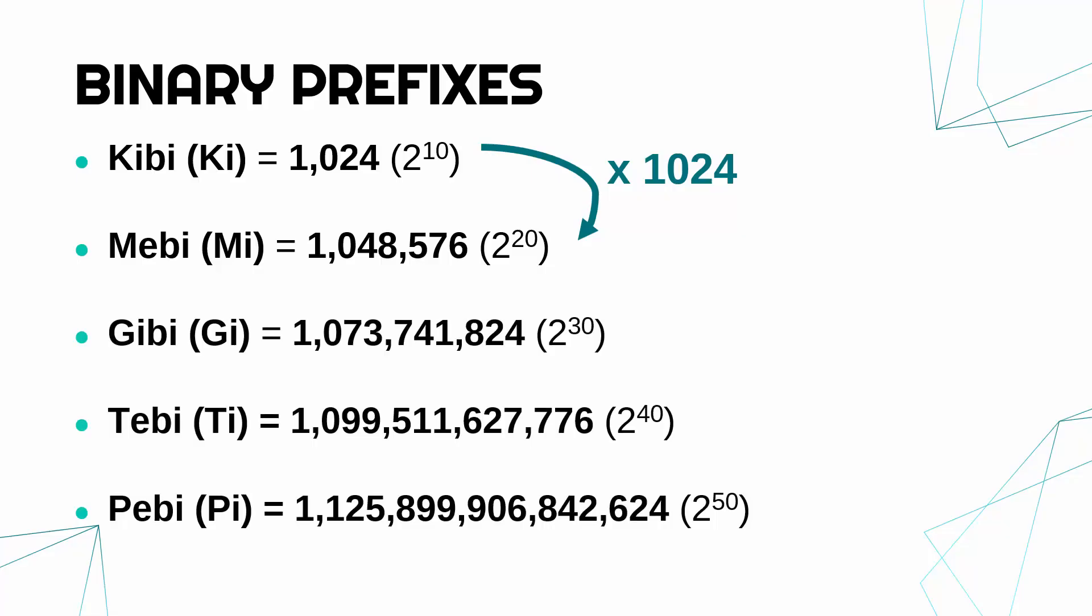So the next one is gibi, tebi, pebi. Each one again times the previous one by 1,024. So the numbers are really ugly and don't seem like they're following a pattern when you first look at it.